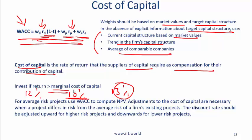On your exam, here is a classic question: you might be given that the marginal cost of capital is 10% and the historical cost of capital is 14%, then asked whether you compare 12 with 10, or 12 with 14, or 12 with the average of 10 and 14. Many people who don't know what is going on will take the average, but you should take 10% because that is the marginal cost of capital.